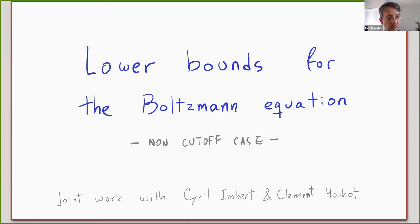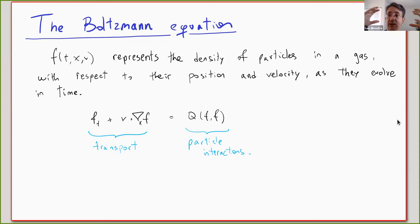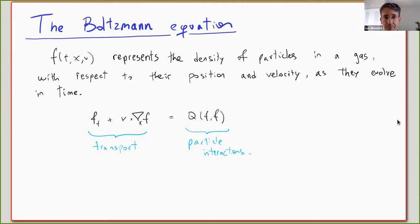This work on lower bounds for the Boltzmann equation is a piece in a larger puzzle, which is about finding estimates for the Boltzmann equation that are conditional to microscopic bounds. Let's start from the beginning: the Boltzmann equation describes the evolution of the density of particles in a gas. It sits at a mesoscopic scale — between the microscopic scale of exact positions and velocities of all particles, and the macroscopic description given by the Euler or Navier-Stokes equations.